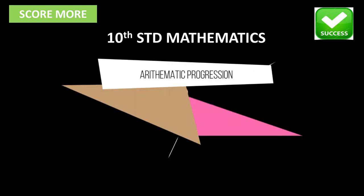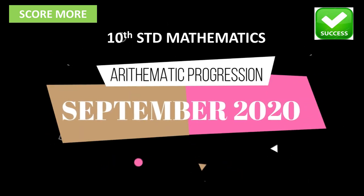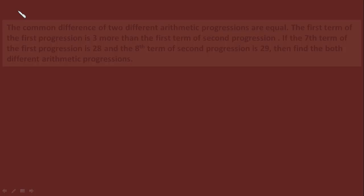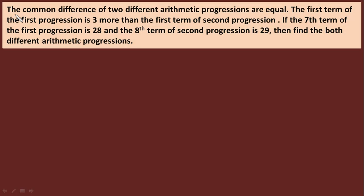Hello dear students, welcome again to the Score More series. Let us solve another difficulty level problem that appeared in the September 2020 question paper, which was given for five marks. The problem states: the common differences of two different arithmetic progressions are equal. The first term of the first progression is 3 more than the first term of the second progression. If the seventh term of the first progression is 28 and the eighth term of the second progression is 29, find both arithmetic progressions.